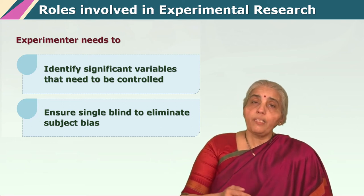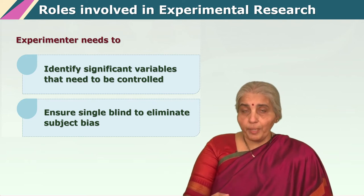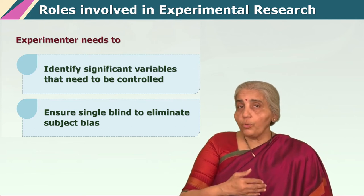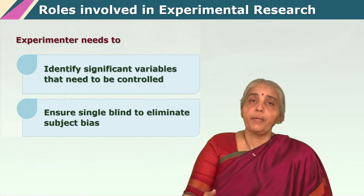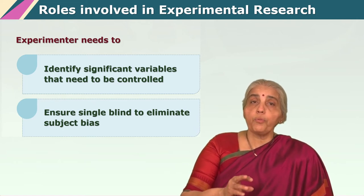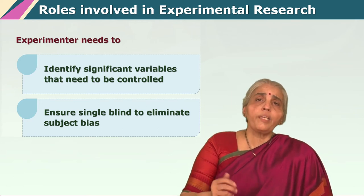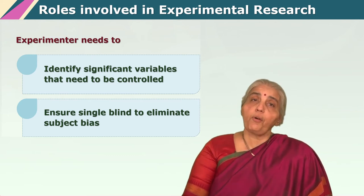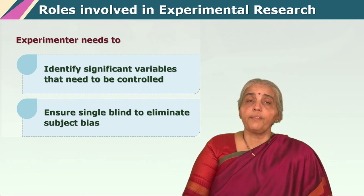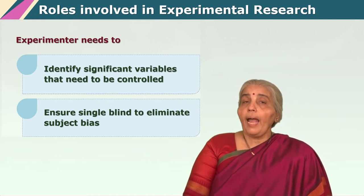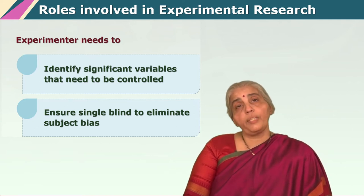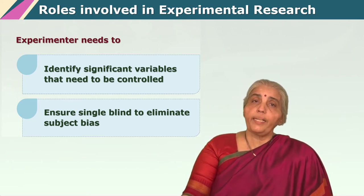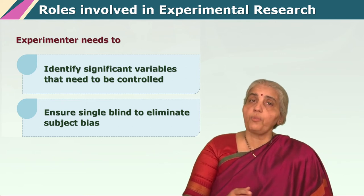Also the experimenter has to look at what will be the impact if the subjects know they are part of that particular experiment. For this, what the experimenter needs to do is to institute a single blind, which means that the subjects are not aware which group they are in. So if I am a student in that classroom or a participant in that medical experiment, I do not know whether I am going to be part of the experimental group or control group, and so I have no expectations from myself and no bias in terms of what kind of performance I am likely to deliver on the task measuring the dependent variable.